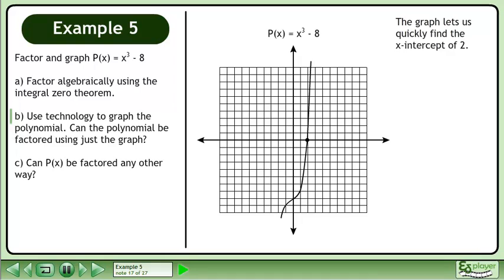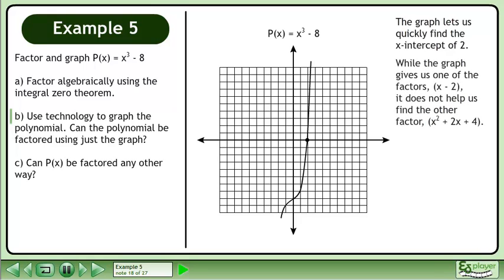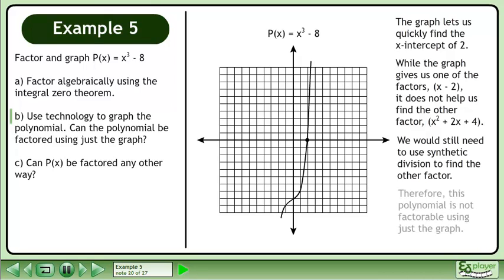The graph lets us quickly find the x-intercept of 2. While the graph gives us one of the factors, x - 2, it does not help us find the other factor, x² + 2x + 4. We would still need to use synthetic division to find the other factor. Therefore, this polynomial is not factorable using just the graph.